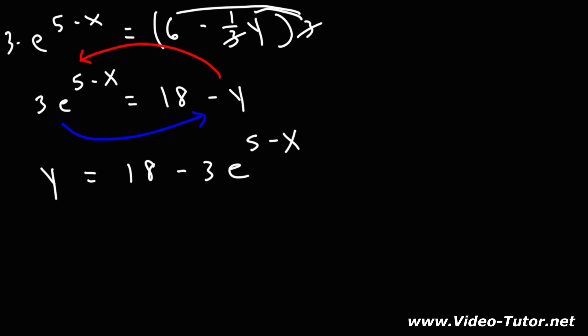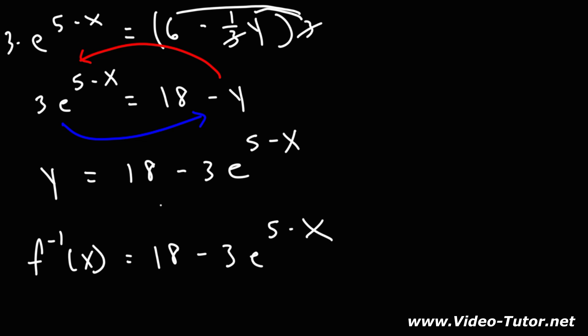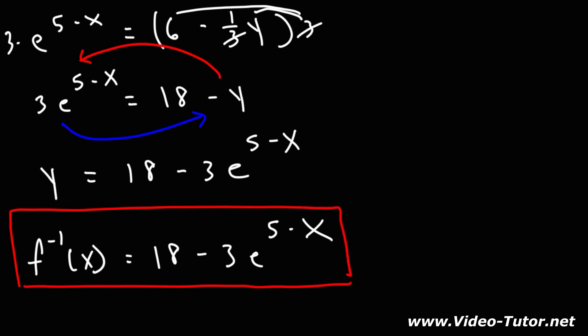So y is going to equal positive 18 minus 3e raised to the 5 minus x. Now we have y by itself, so we can replace that with the inverse function. The inverse of f of x is going to be 18 minus 3 times e raised to the 5 minus x. And that is going to be the final answer. That's how you can find the inverse of a regular log function or a natural logarithmic function.